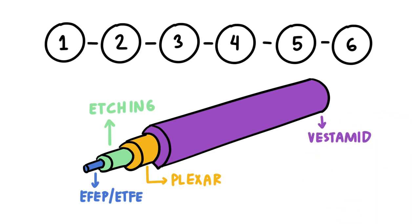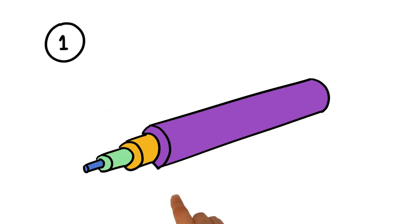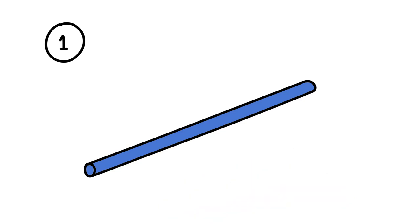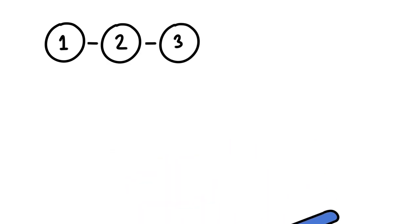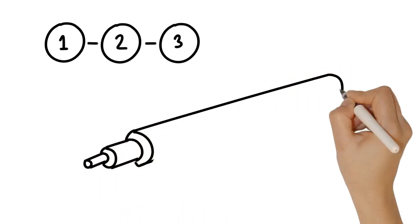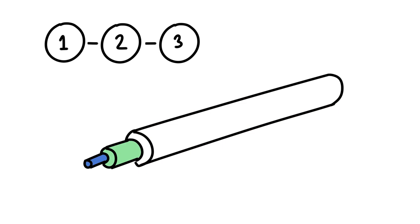First, the extruder creates the smooth FEP or ETFE fluoropolymer lining. Second and third, the outer surface is either etched or applied with an adhesive layer of Plexar, depending on fluoropolymer types.